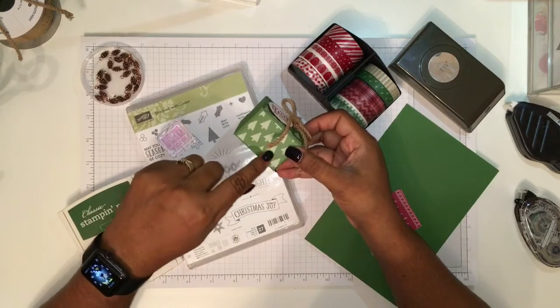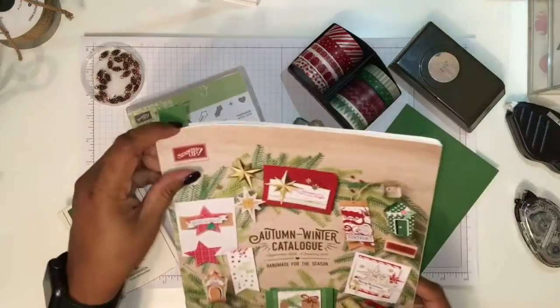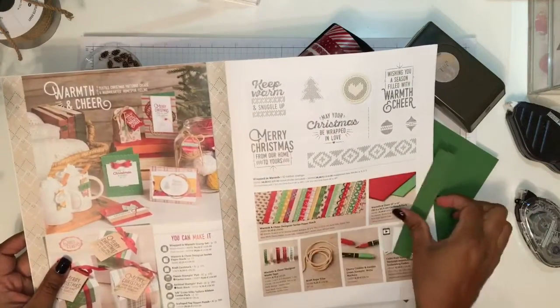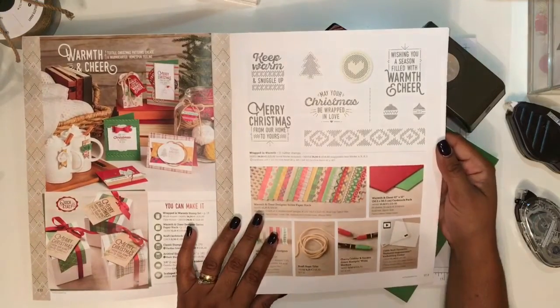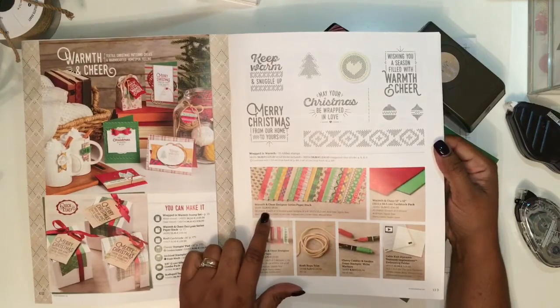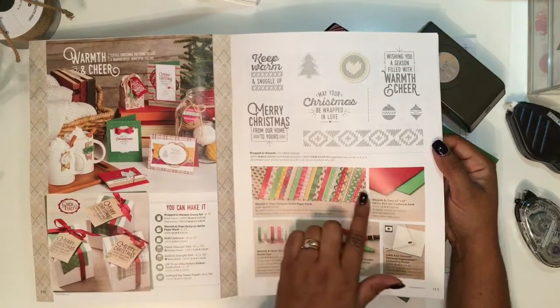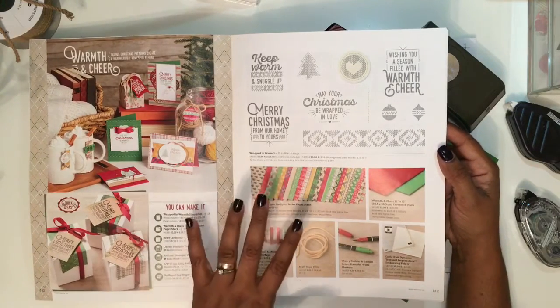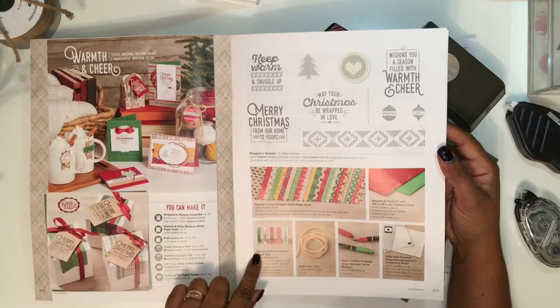This is designer series paper called Warmth and Cheer. It has 12 different designs and comes with four sheets of each design, so you get 48 sheets of paper in 6 by 6. This is the whole collection and the coordination of this is what I love.